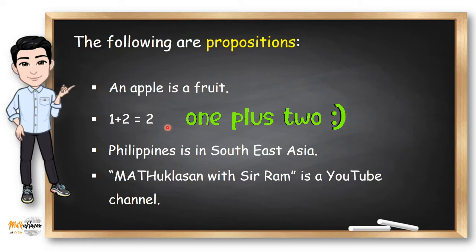How about one plus one equals two? This is definitely false because one plus two is equal to three.